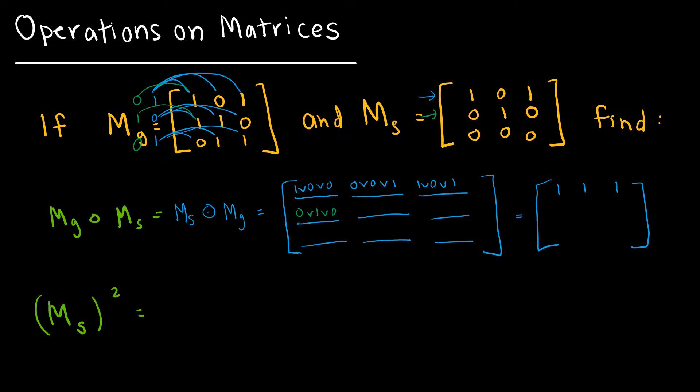Then 0 and 0 which is 0, 1 and 1 which is 1, 0 and 1 which is 0. Then 0 and 1 which is 0, 1 and 0 which is 0, 0 and 1 which is 0. So my next row is 1, 1, 0.